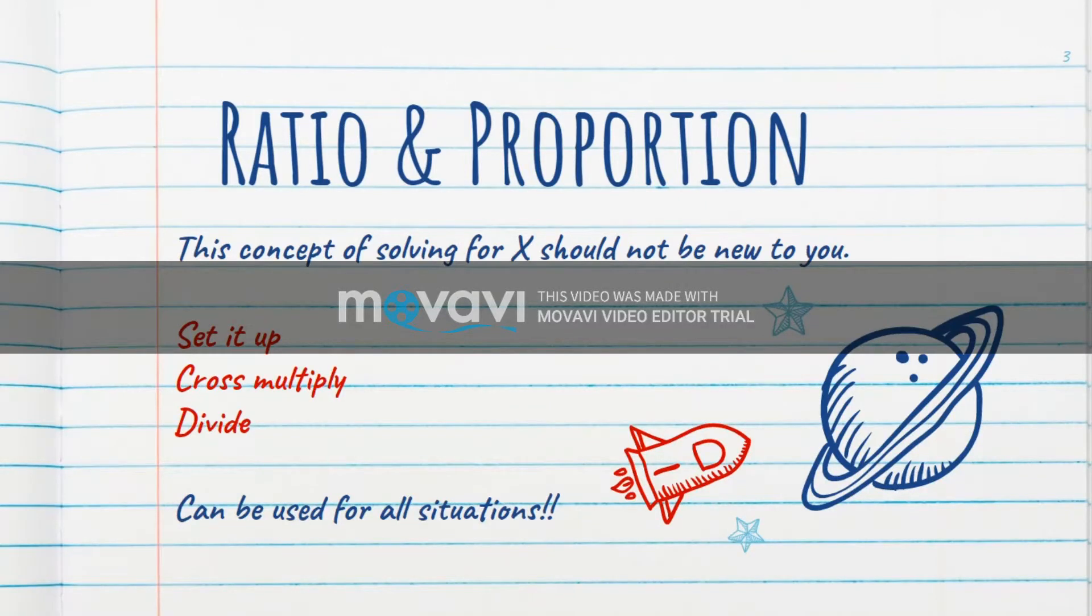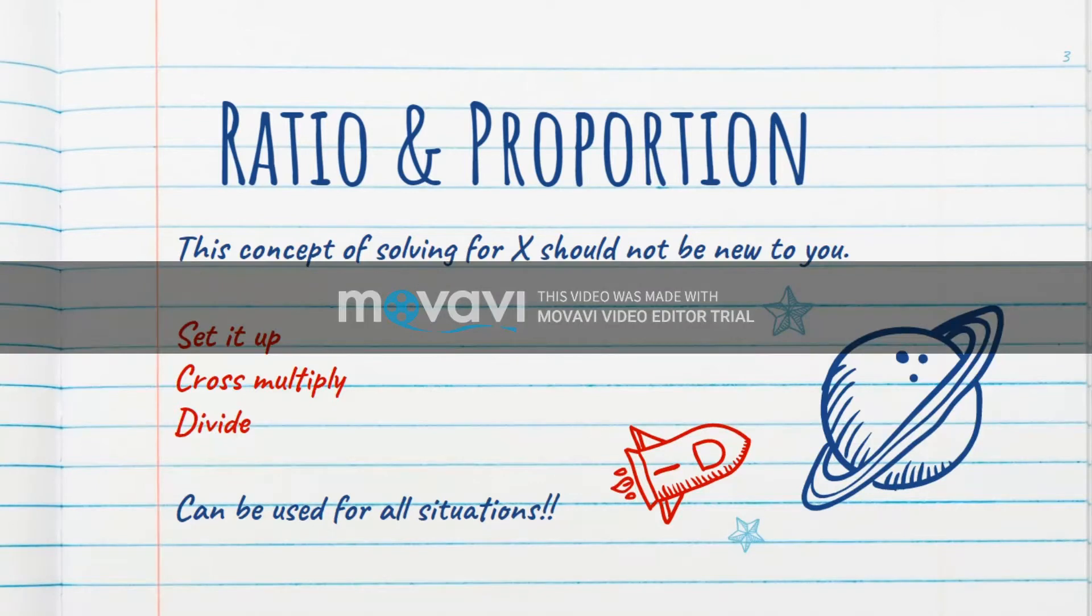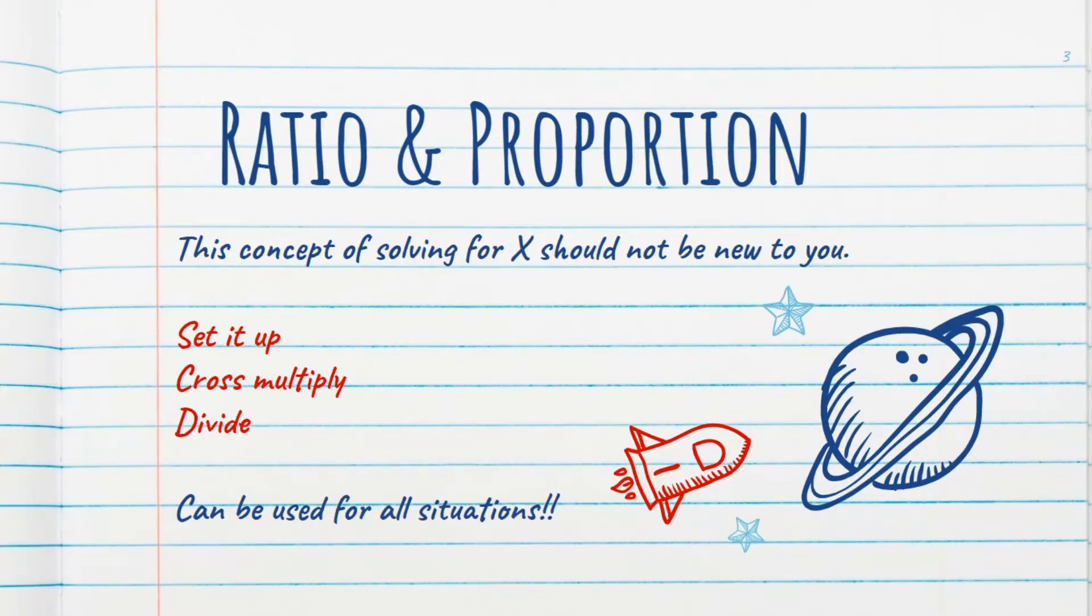Ratio and proportion is my preferred method of figuring out nursing math. We can use it for any situation, and I'm going to show you that. It's a concept of solving for x that shouldn't be new to you because you should have learned it in Algebra 1 and reinforced it in Algebra 2, and we're going to reinforce it again. You set up the problem, you cross multiply, and divide.